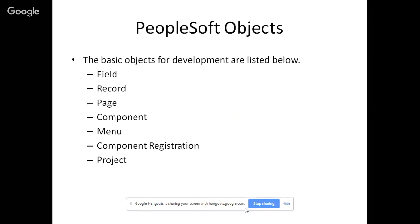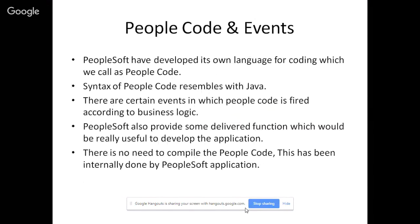PeopleSoft has its own language called PeopleCode. Its syntax is similar to Java. There are events — on certain actions, these events are fired. It is very important to know which event is fired on which action. That is the whole soul of writing PeopleCode. All business logic will be decided here. PeopleSoft also provides some delivered functions which are really useful to develop applications, and there is no need to compile PeopleCode manually — everything will be done by the PeopleSoft compiler automatically.